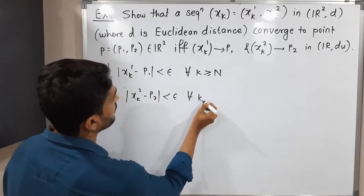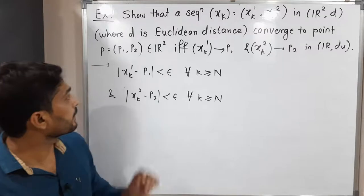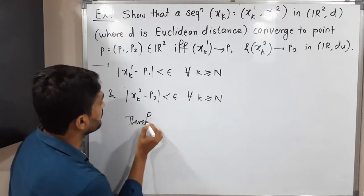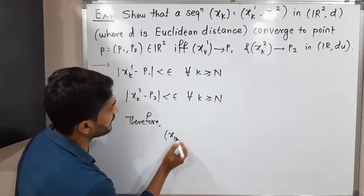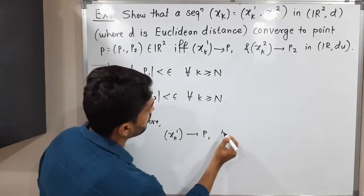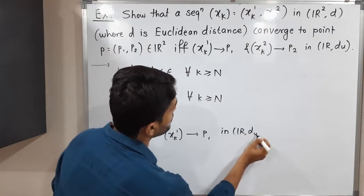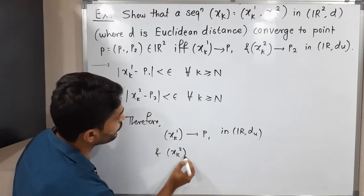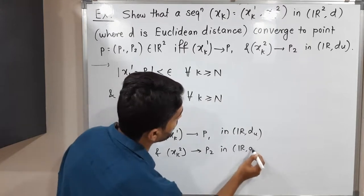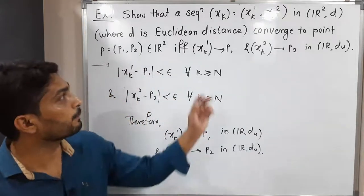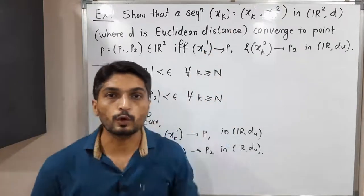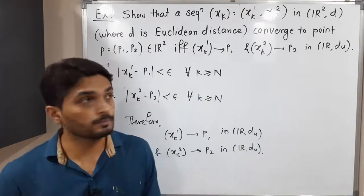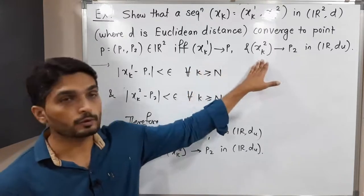This is the definition of a convergent sequence. Therefore, by the definition of a convergent sequence, xk1 converges to p1 in R with the usual metric du, and from the second inequality, xk2 converges to p2 in R with du. In this way we have proved that the component sequences xk1 converges to p1 and xk2 converges to p2, completing the first half of the proof.